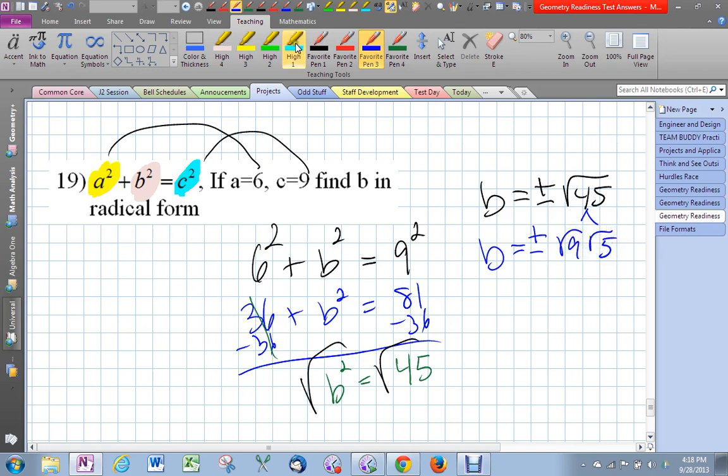So when I simplify this radical, this is plus and minus 3 radical 5, and that's the two answers that I get.